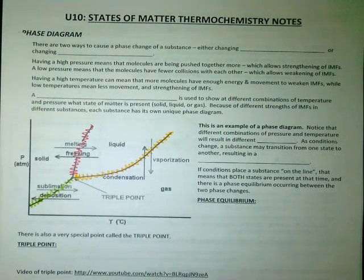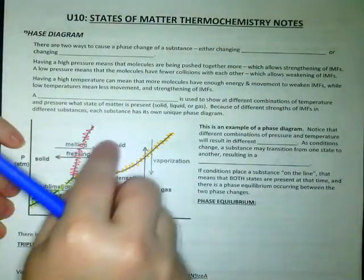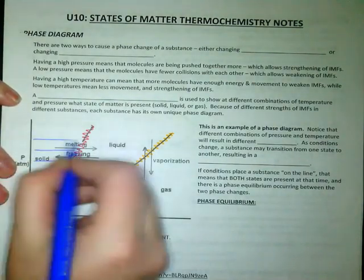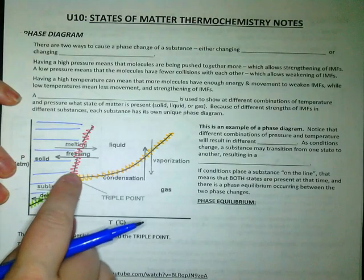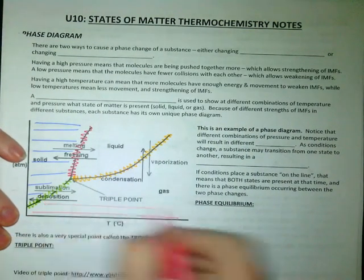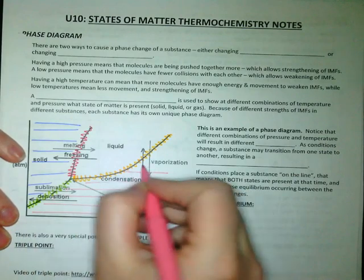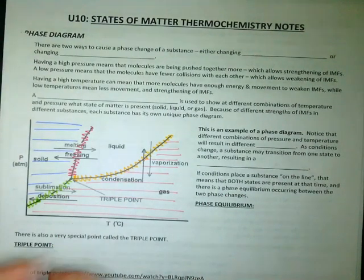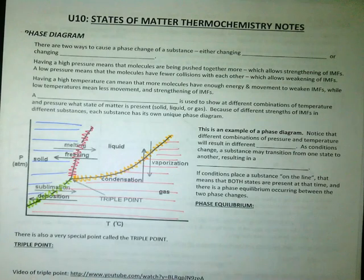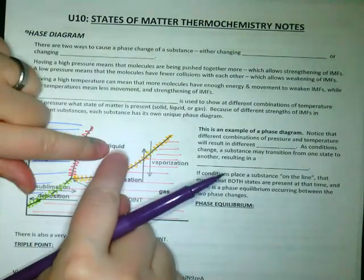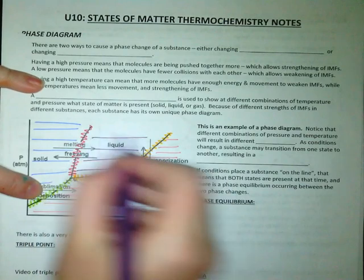If I'm not at a phase equilibrium, then I would end up someplace in one of these open areas of my graph. Anywhere in this area that's called solid, as long as I'm not on a line, anywhere here I would be a solid. The same is true for the other two sections. Anywhere in this long gaseous part, any combination of temperature and pressure that ends up in this section would be a gas. And any combination of temperature and pressure that ends me in this entire section would be a liquid.